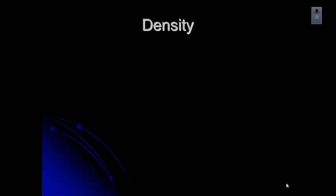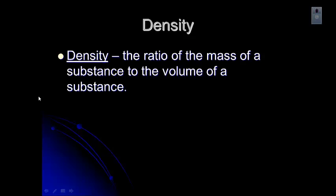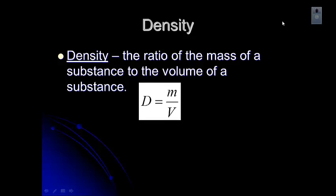When we actually calculate density, we calculate it by using the ratio of the mass of a substance to its volume. Here's the equation: D is density, M is mass, V is volume.